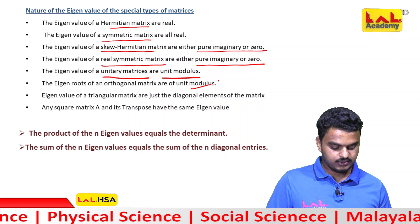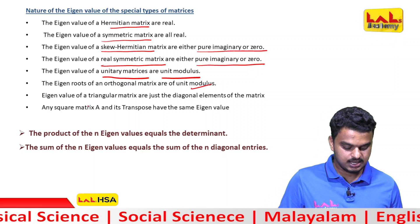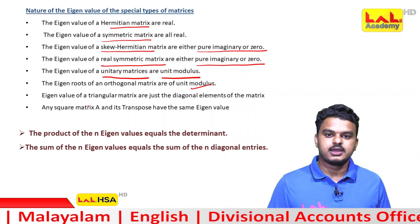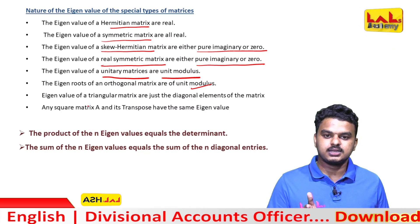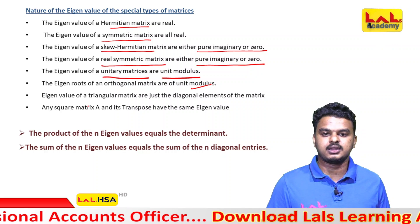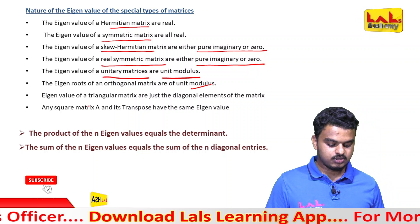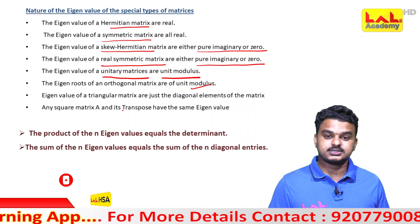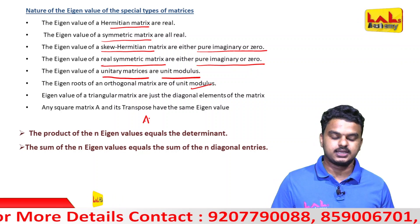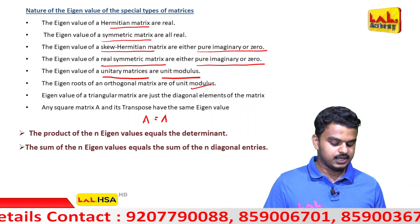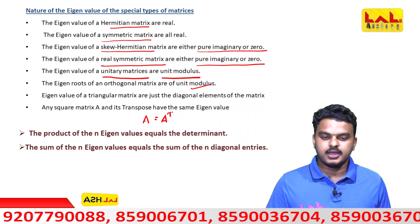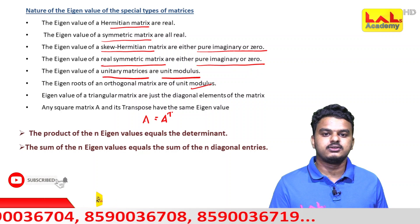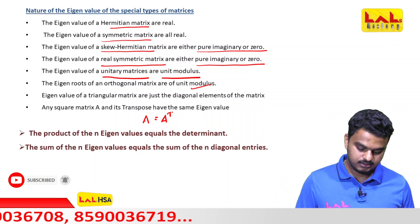The eigenvalue of a triangular matrix are just the diagonal elements of the matrix. A transpose has the same eigenvalues. For every square matrix, A and its transpose share the same eigenvalues — this is very important to note.